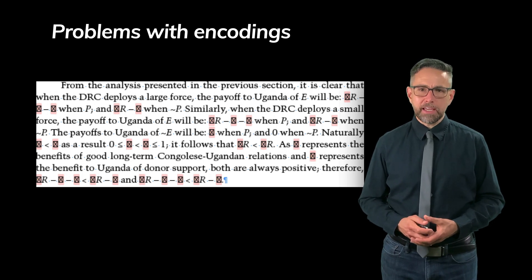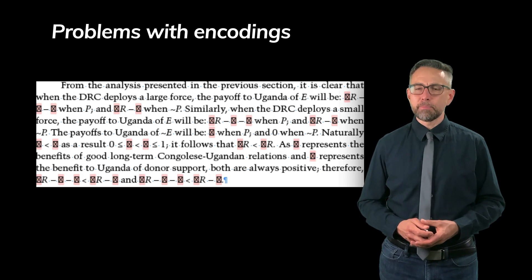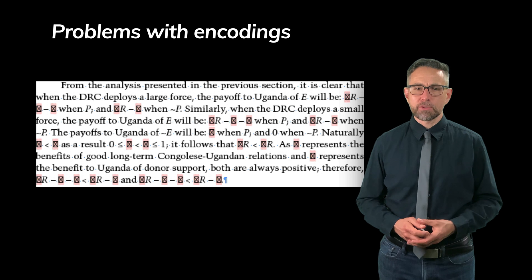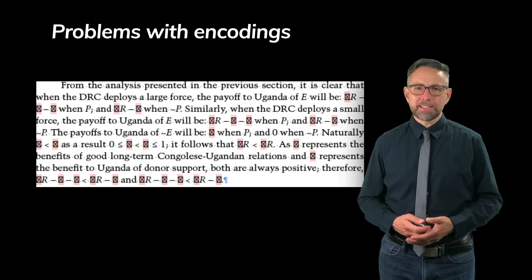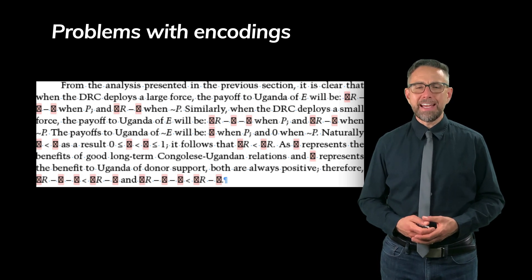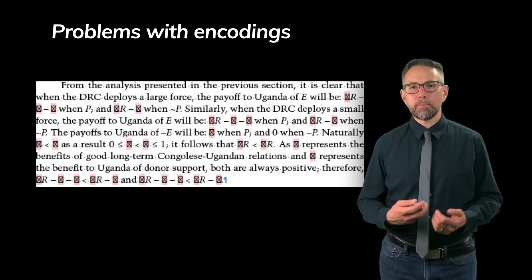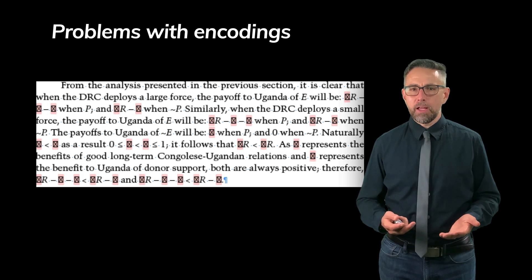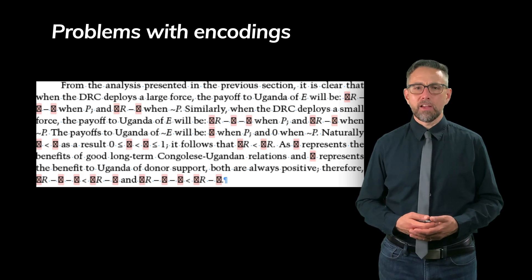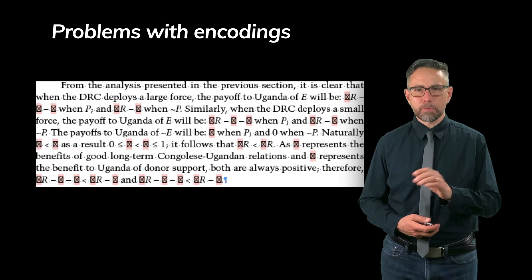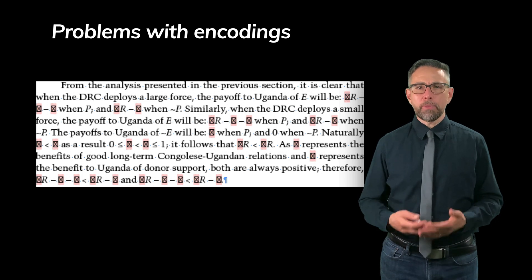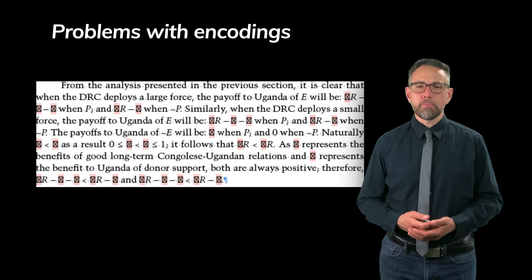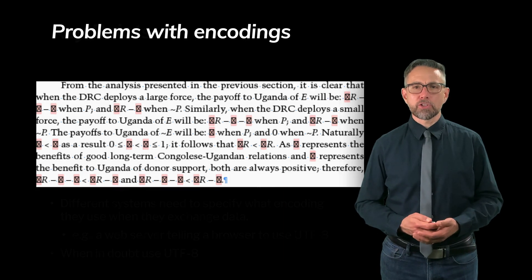Here's an example of the same thing in a PDF document. You can see math symbols replaced by a box with an X through it — the equivalent of the question mark from the previous example. The document doesn't actually want those boxes; the program showing the PDF used a translation table that doesn't know how to translate those characters. If you opened the PDF with a different character encoding, the program would probably be able to show it correctly.